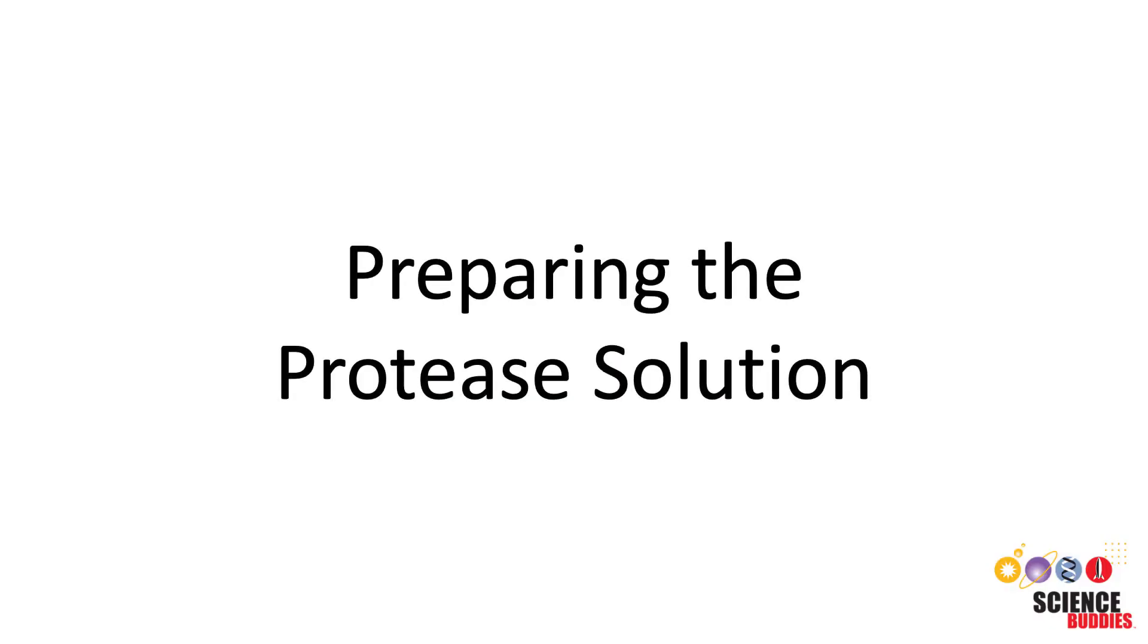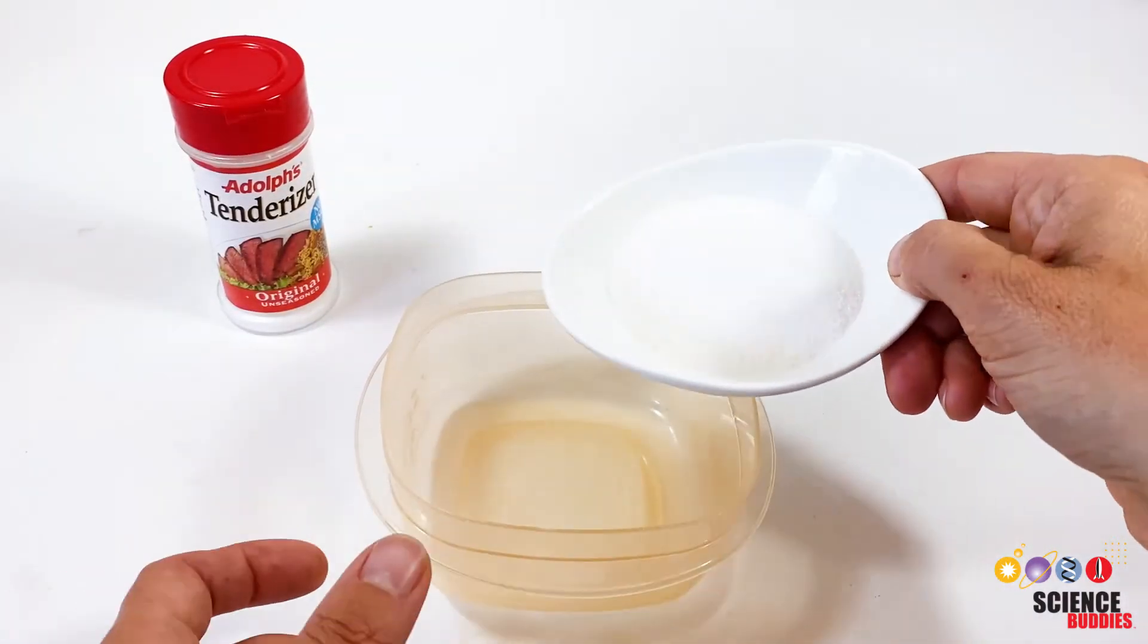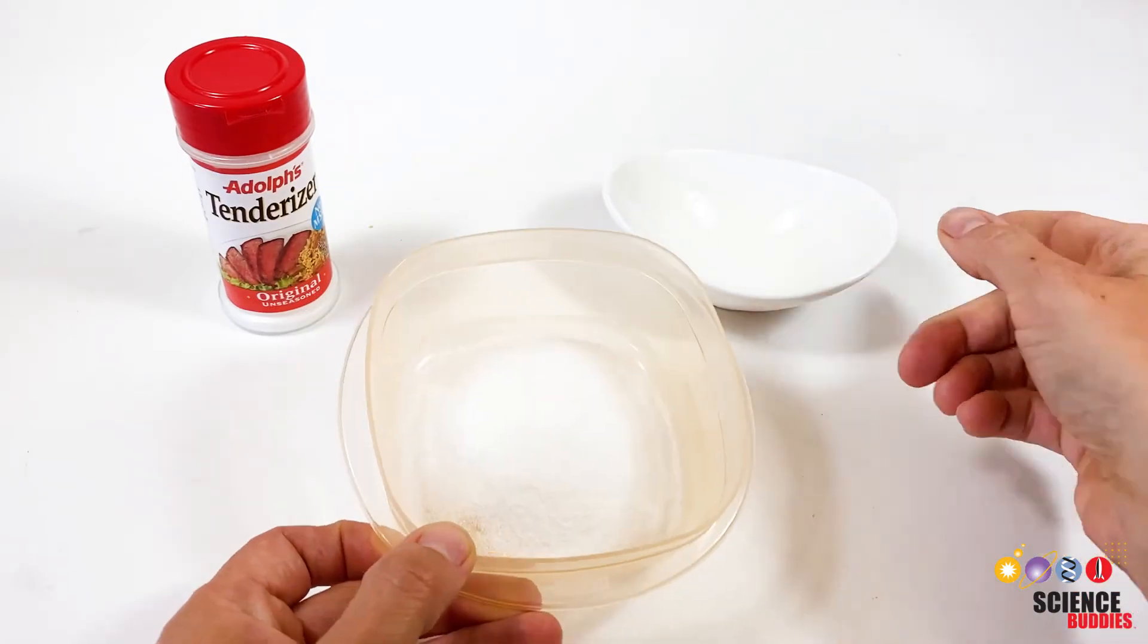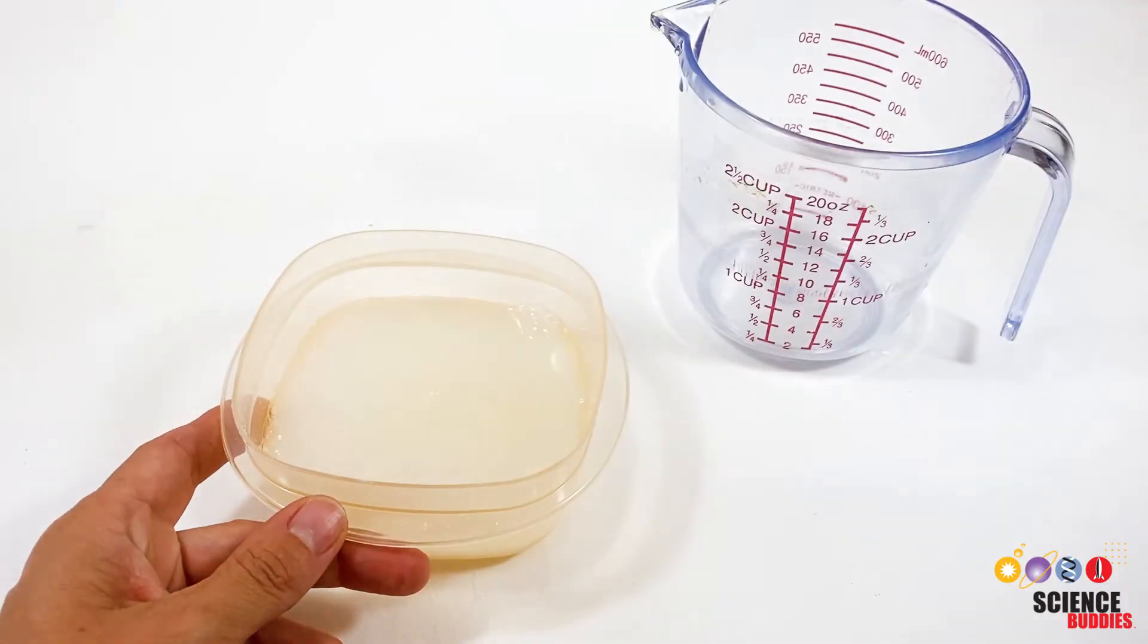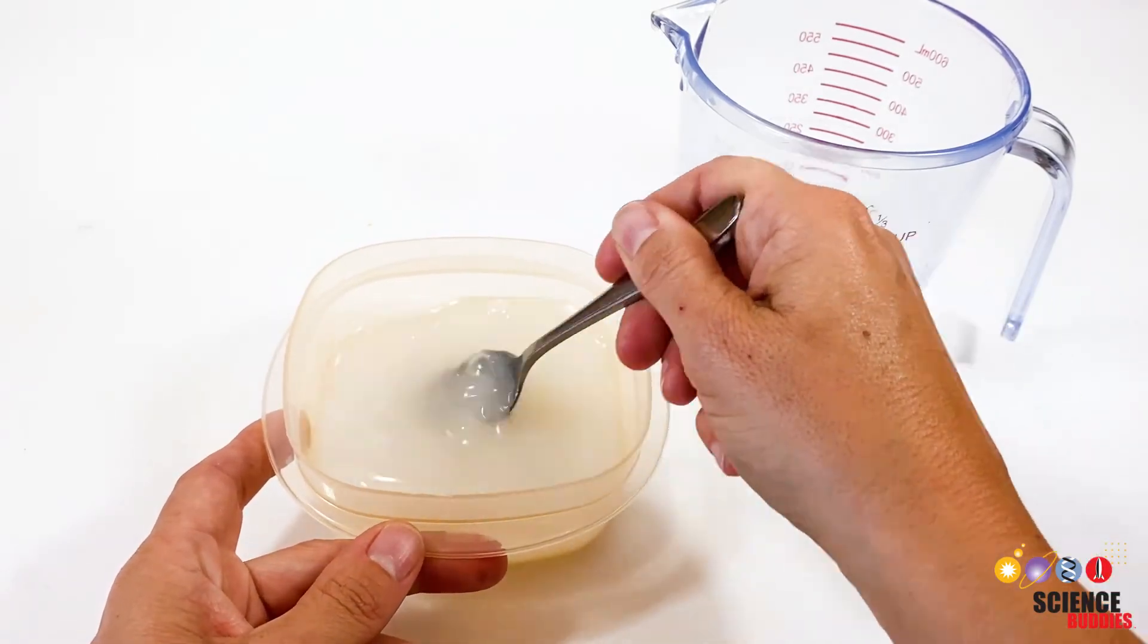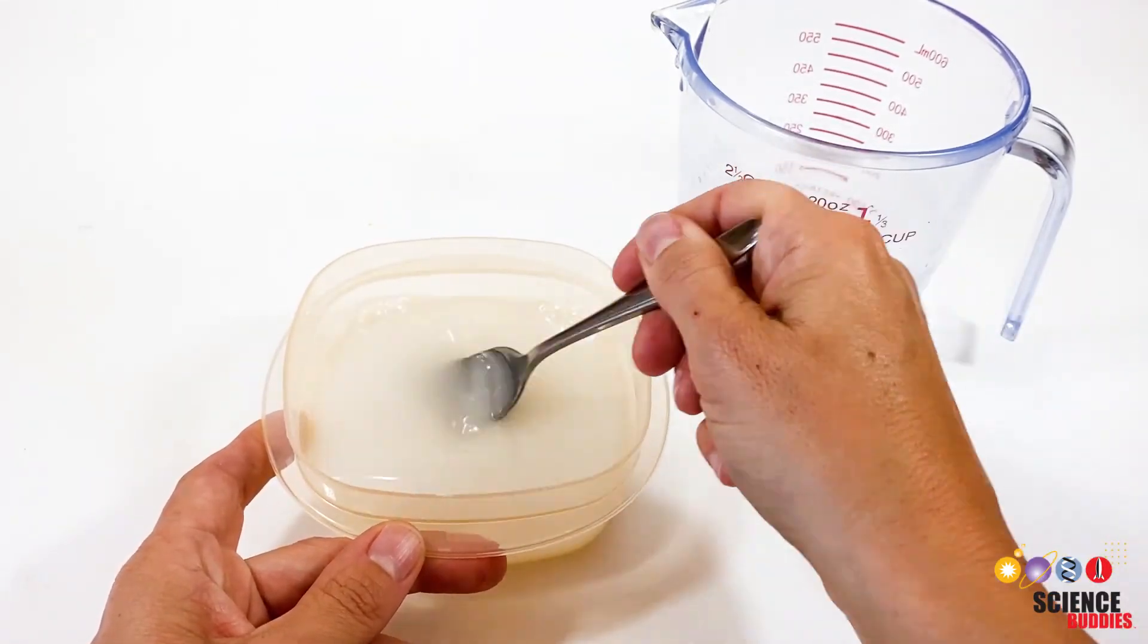Then prepare the protease solution, which represents the gastric environment. Pour 1 cup or 100 grams of meat tenderizer into the second container. Add 1 cup of water and stir well. If some of the meat tenderizer doesn't dissolve, that is okay. Now you should have all the main components of your model ready to go.